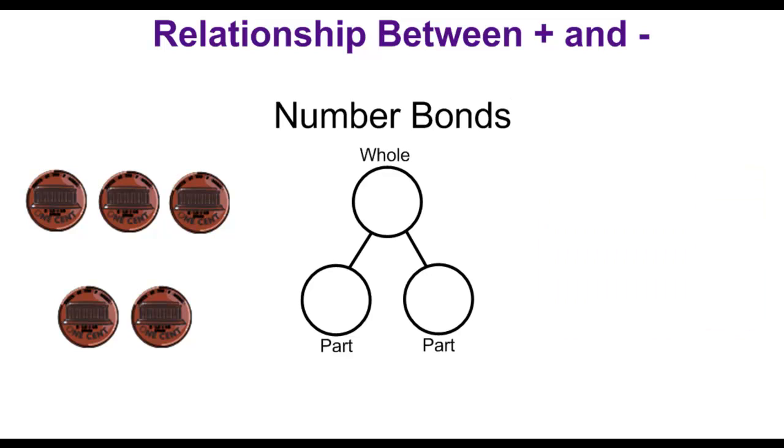Suppose the students are given two groups of pennies. Obviously, we can see that one of the groups has three, and the other has two. We would ask the students questions about these pennies. How many pennies are there in each group? How many pennies are there total? The student should be able to use their knowledge to count the total number of pennies. That would be using one of the count-on strategies.